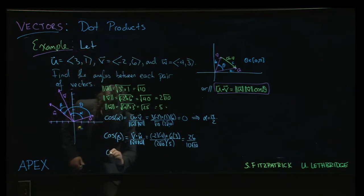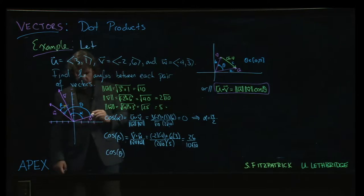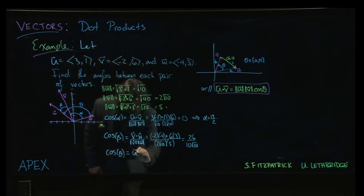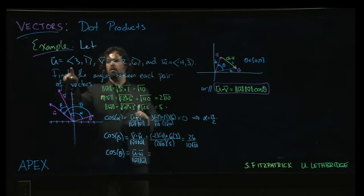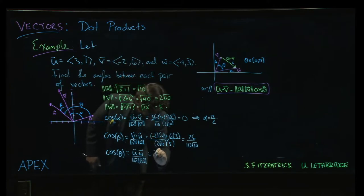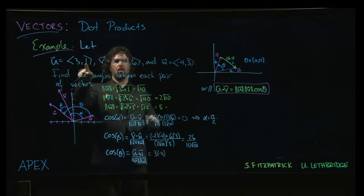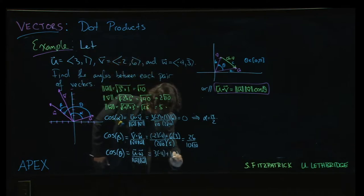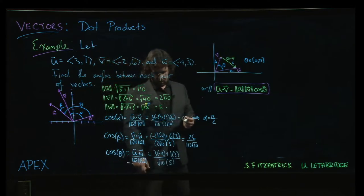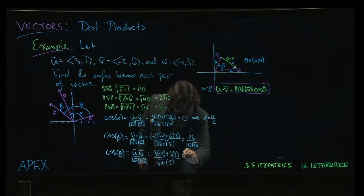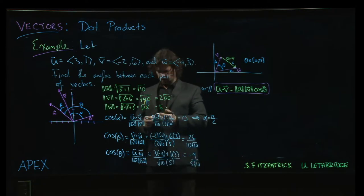Alright, finally, we can do cosine of theta. And so now we're going to do u dot w over magnitude of u, magnitude of w. And so 3 times minus 4, and then 1 times 3, and we're going to divide by the magnitude of u, which was root 10, magnitude of w is 5. Alright. So minus 12 plus 3, we get minus 9 over, well, there's not much I can do with the bottom, 5 root 10.